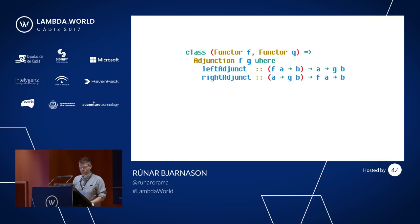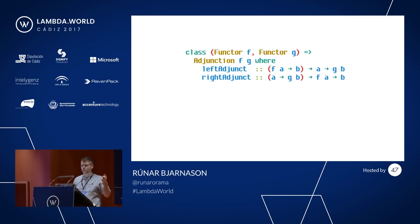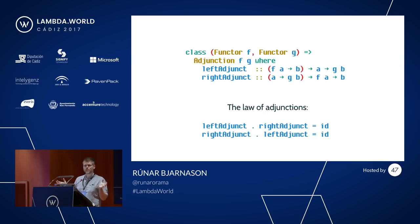We can capture this kind of relationship in Haskell. There's going to be a lot of Haskell on these slides. If we have two functors F and G, we can make an adjunction between them where we just have to witness this isomorphism: if we have a function from F of A to B, we can turn it into a function from A to G of B, and vice versa. This has to be an isomorphism — it's the law that if we go left adjunct and then right adjunct, we should get the identity, and vice versa.